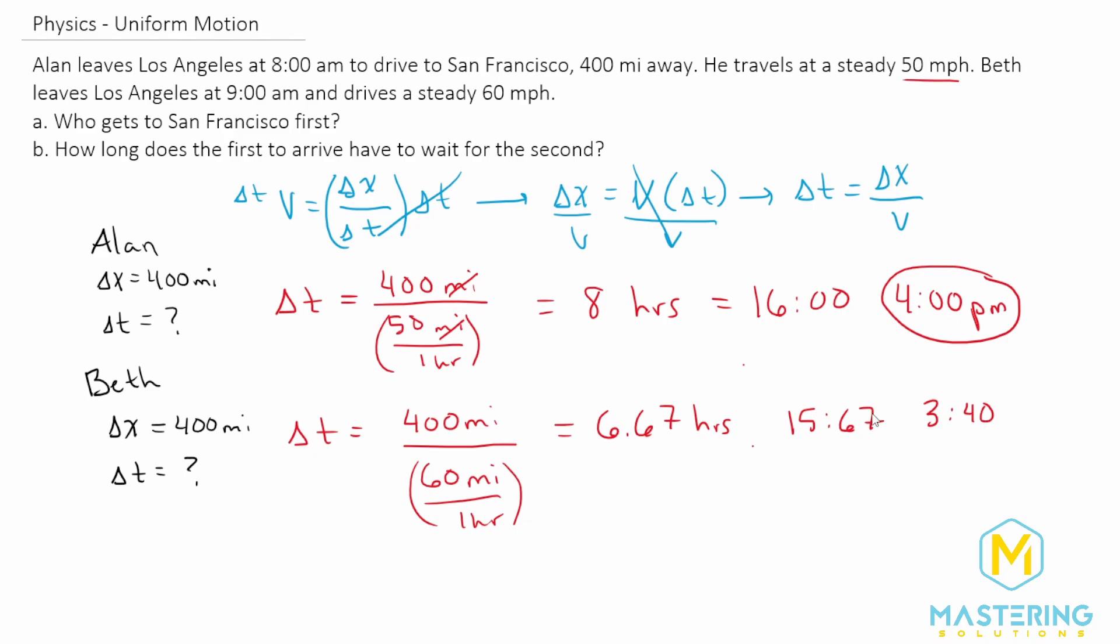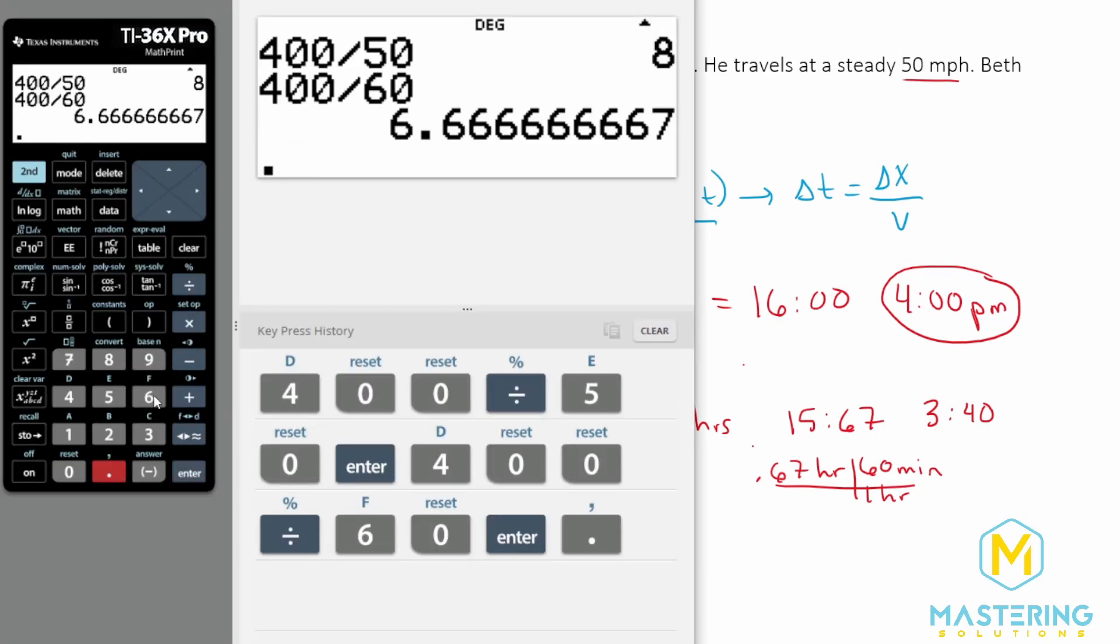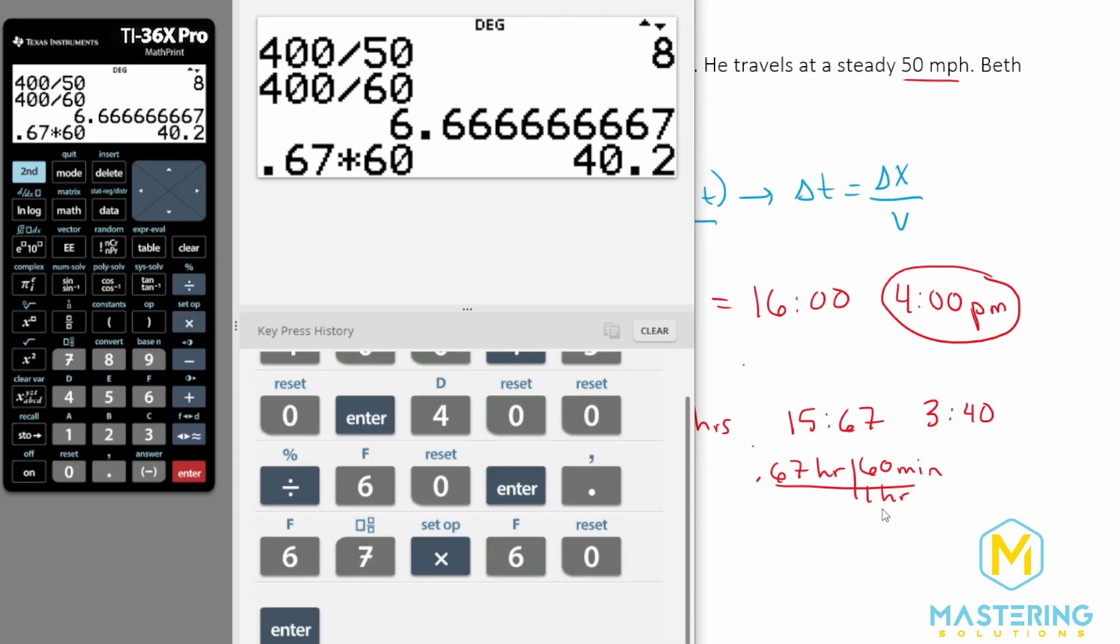To do this, all I did was I took 6.67 hours, and we want to multiply that by 60 minutes. So we have 0.67 times 60 to put us into minutes, which is 40.2.